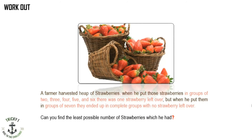Today's workout question: a farmer harvested a heap of strawberries. When he put those strawberries in groups of two, three, four, five, and six, there was one strawberry left over. But when he put them in groups of seven, they ended up in complete groups with no strawberry left over. Can you find the least possible number of strawberries he had? Try this question and share your answers in the comment section.